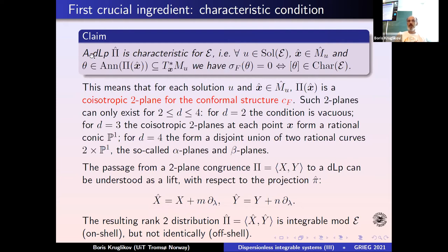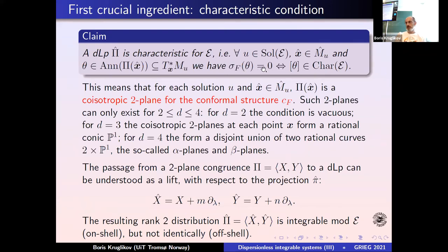In other words: if something is a dispersional Lax pair, any covector which annihilates it is characteristic. So we know something about Lax pairs a priori from the equation. If you would like to test integrability and look for a dispersional Lax pair, you look at the characteristic variety of the system and start working with that.